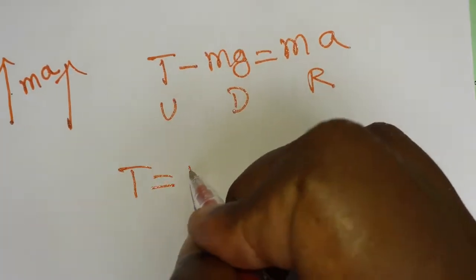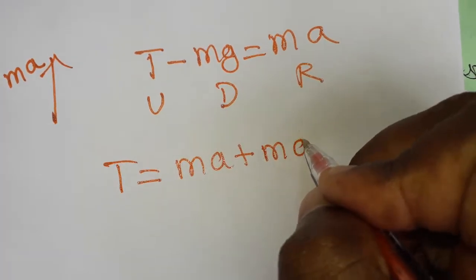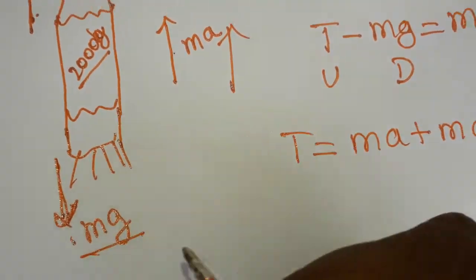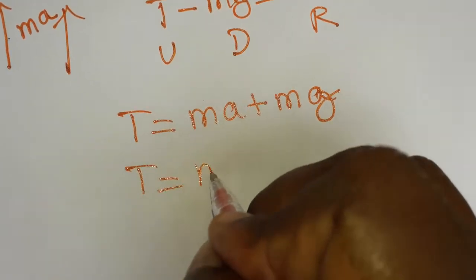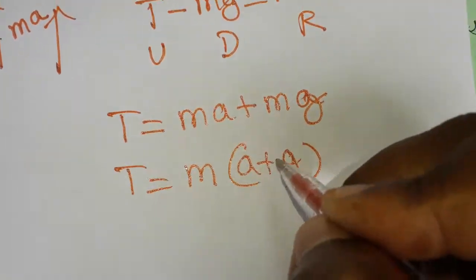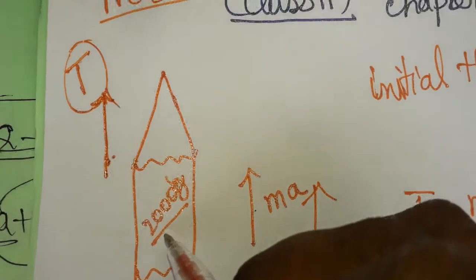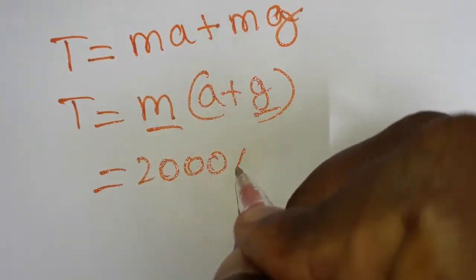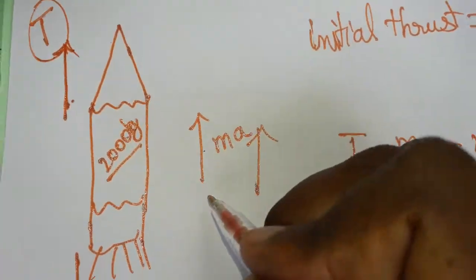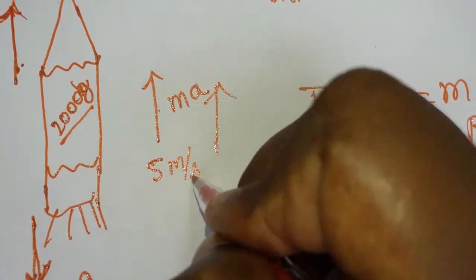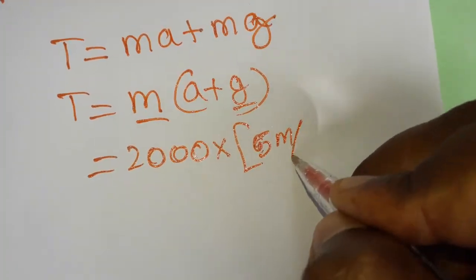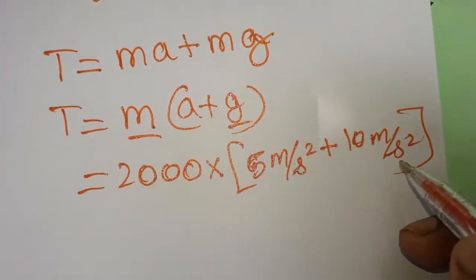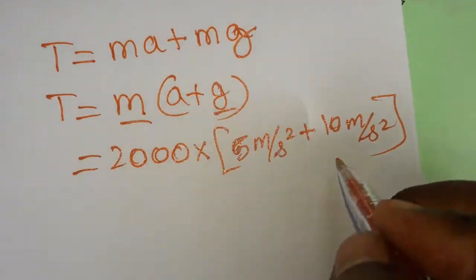So T equals ma plus mg, which means T equals m times (a plus g). Here m is the mass of the rocket and g is the acceleration due to gravity. The rocket mass is 2000 kg, the acceleration a is 5 meters per second squared, and g is 10 meters per second squared. So a plus g equals 15.